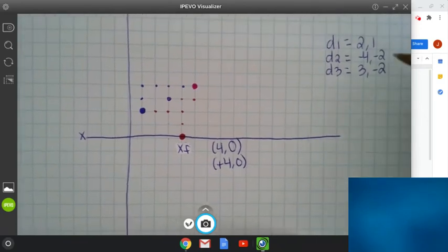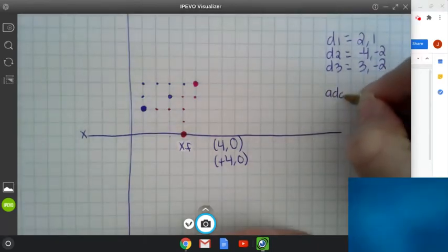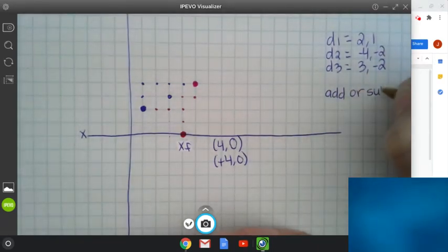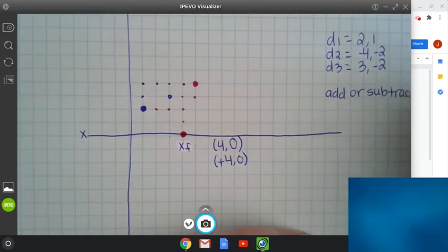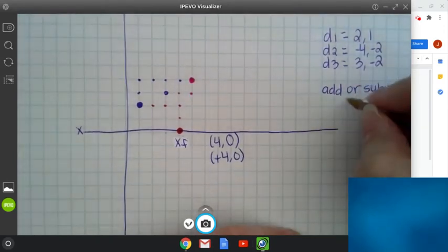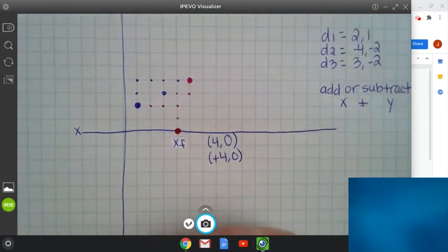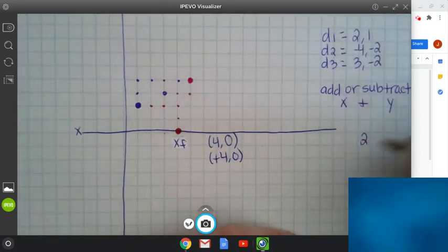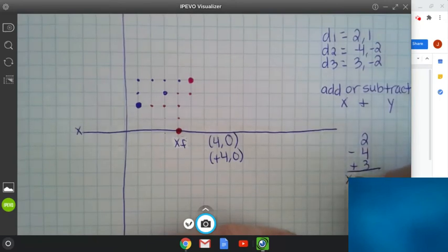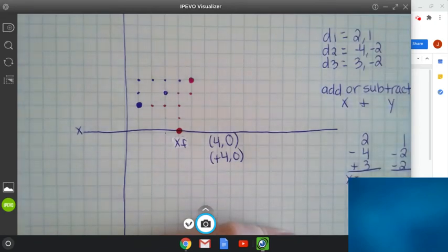What is my total displacement? We're going to go back over here. How you find total displacement is you're going to add or subtract whatever your coordinates are going to show and tell you to do both your X and your Y separately to figure out your total displacement. So we have 2 minus 4 plus 3, and that's going to be for our X. And then we have 1 minus 2 minus 2, and that's going to be for our Y.